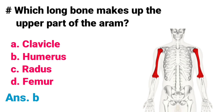Which long bone makes up the upper part of the arm? A) Clavicle, B) Humerus, C) Radius, D) Femur. Correct answer is option B, Humerus. The humerus bone is the long bone that makes up the upper part of the arm.